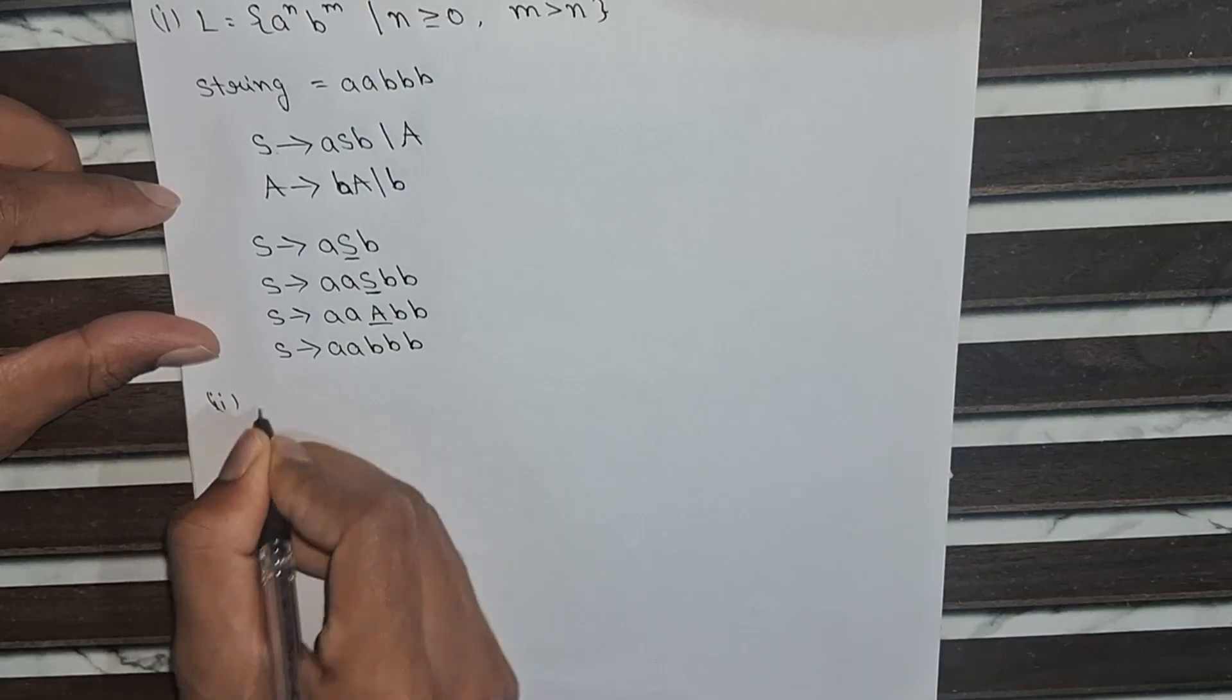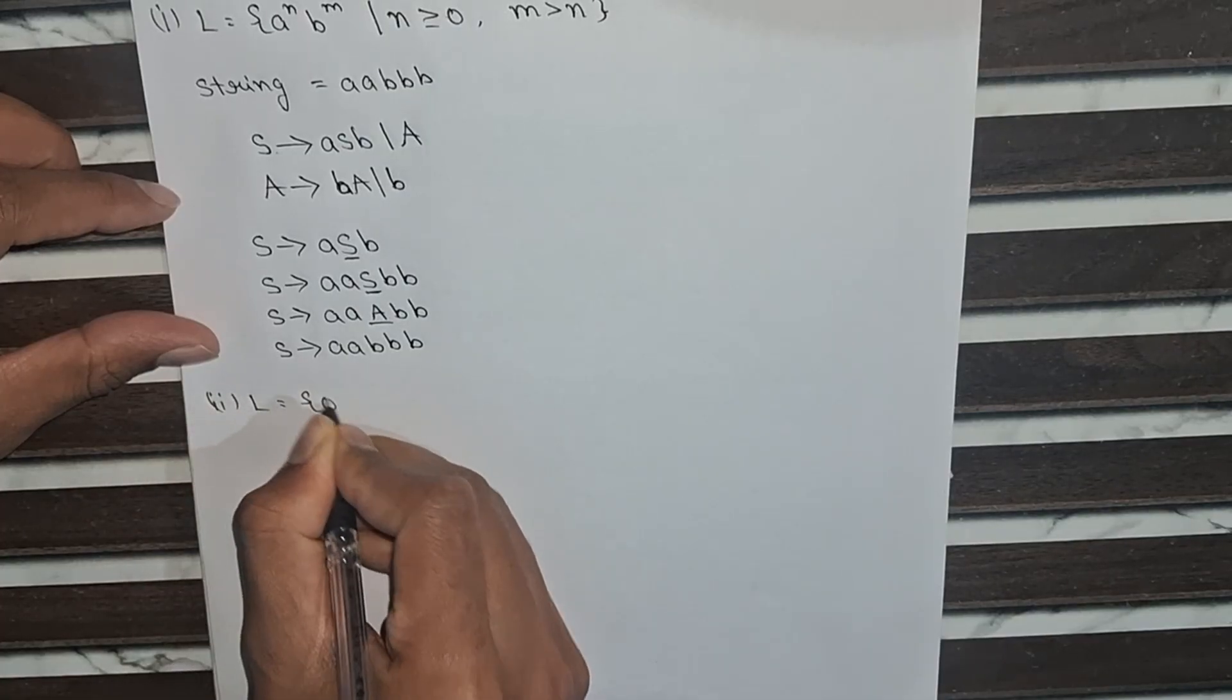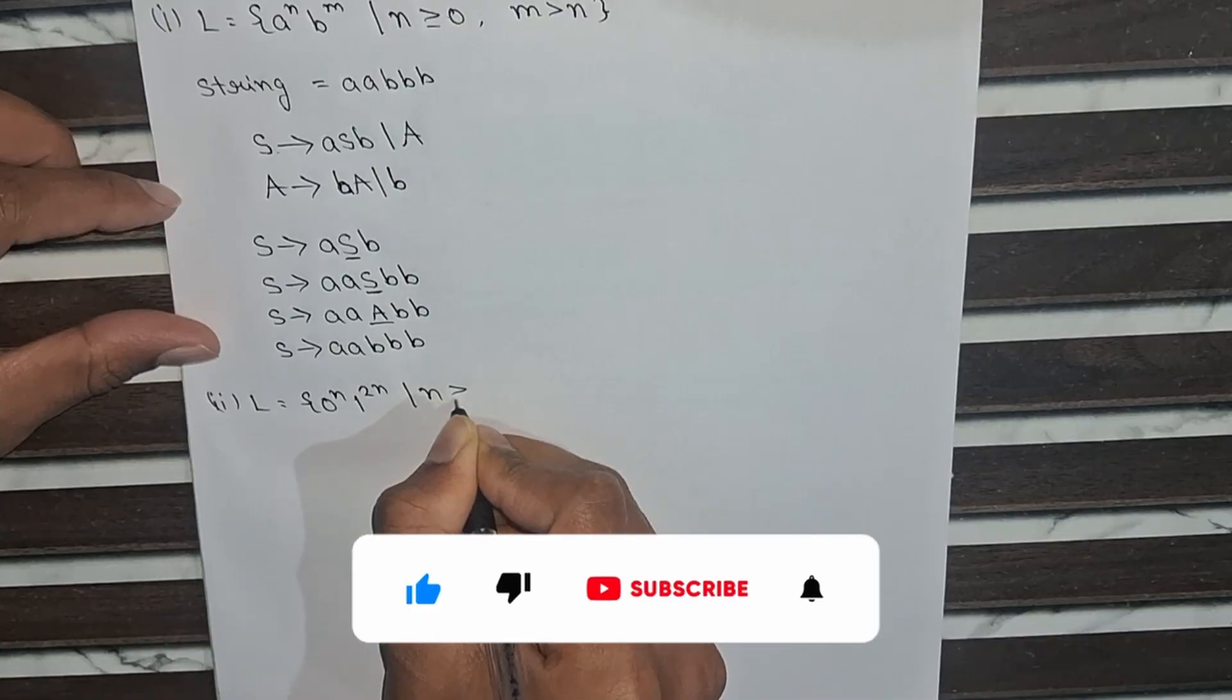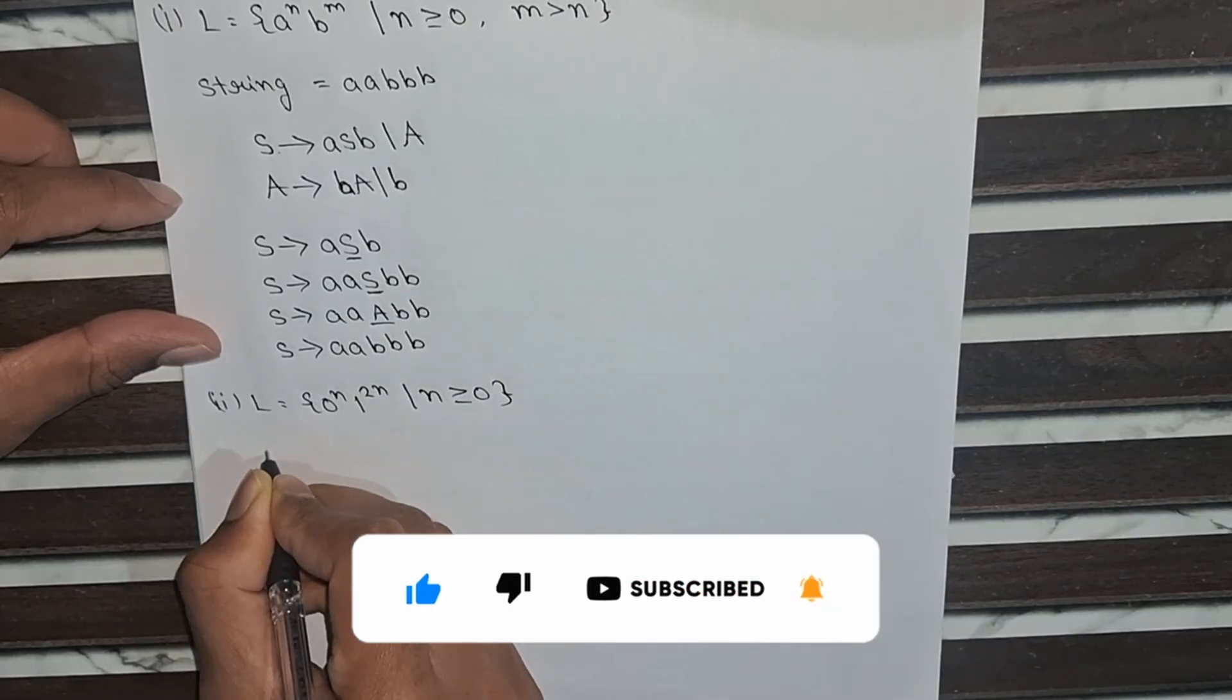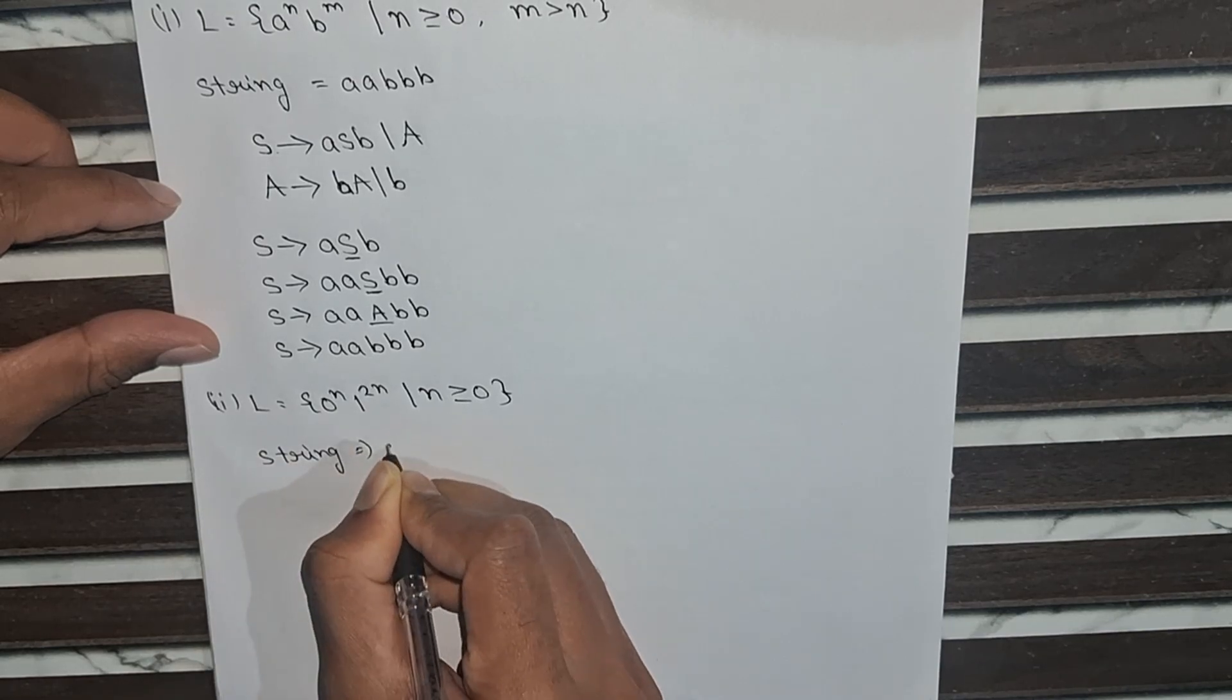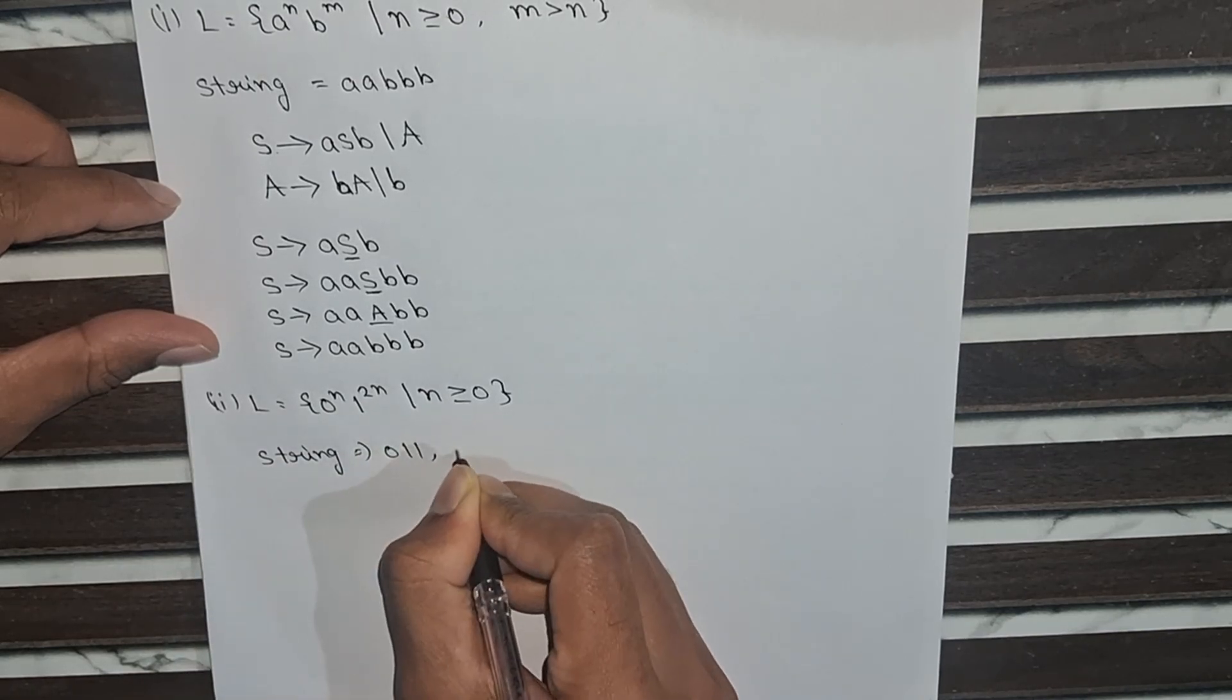So now second language is L equals 0 to the power n, 1 to the power 2n, where n is equal to or greater than 0. So the strings will be 0, 1, 1 or 0, 0, 1, 1, 1, 1.